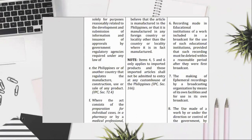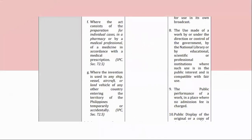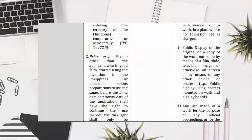(7) The making of ephemeral recordings by a broadcasting organization by means of its own facilities and for use in its own broadcast. (8) The use made of a work by or under the direction or control of the government, by the National Library or by educational, scientific, or professional institutions where such use is in the public interest and is compatible with fair use. (9) The public performance of a work in a place where no admission fee is charged. (10) Public display of the original or a copy of the work not made by means of a film, slide, television image, or otherwise on screen or by means of any other device or process, e.g. public display using posters mounted on walls and display boards.